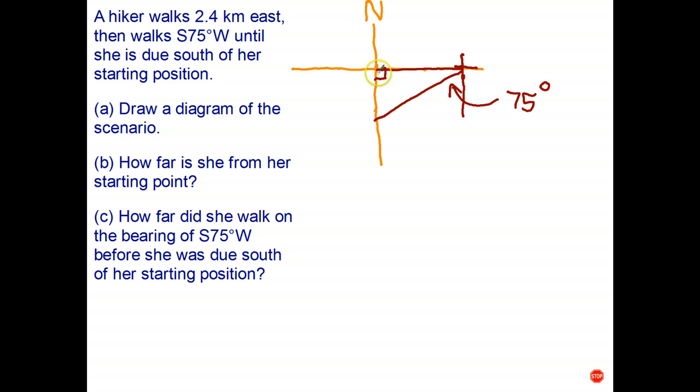She walks 2.4 kilometers east, so let's put the 2.4 kilometers in there. From there she walks south 75 degrees west until she's due south of her starting position. So we've drawn the diagram.